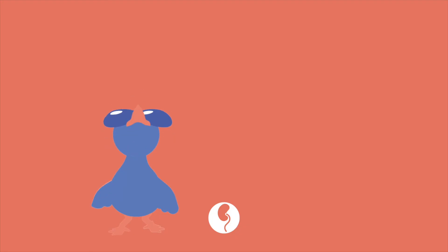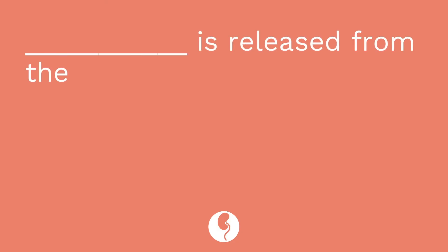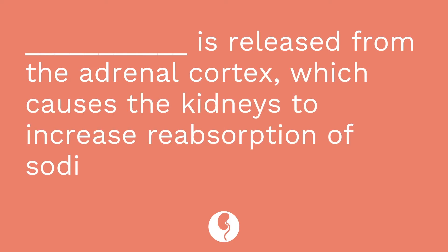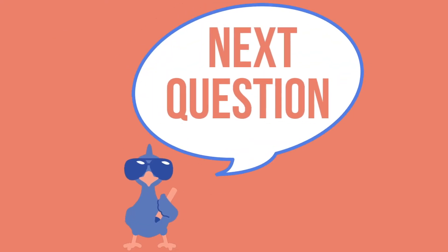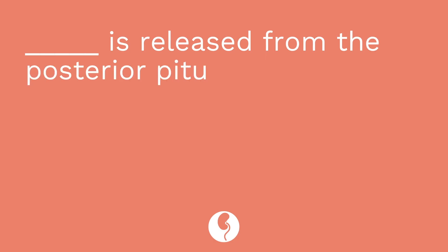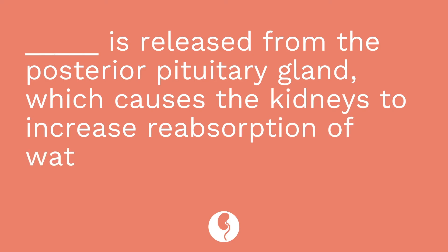It's time for a quiz. I have three questions for you. Question one is a fill-in-the-blank: blank is released from the adrenal cortex, which causes the kidneys to increase reabsorption of sodium and water. The answer is aldosterone. Question two is also a fill-in-the-blank: blank is released from the posterior pituitary gland, which causes the kidneys to increase reabsorption of water. The answer is ADH, or antidiuretic hormone.